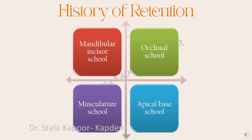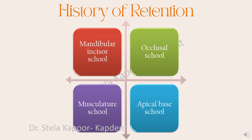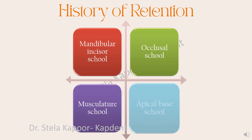Because orthodontics is quite an old speciality, for most of the concepts that exist there would be multiple schools of thought and theories. The same goes for retention. There are four major schools of thought: the mandibular incisors school of thought, the occlusal school, the musculature school, and finally the apical base school of thought.